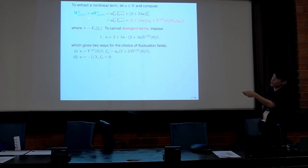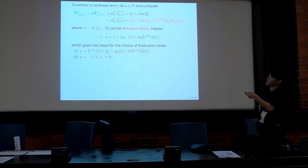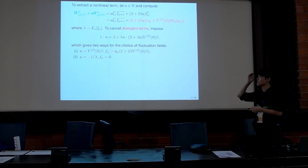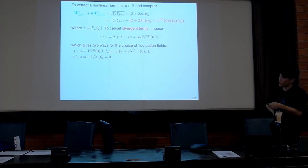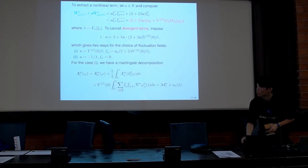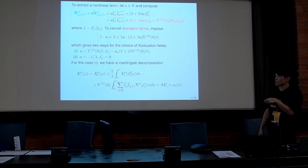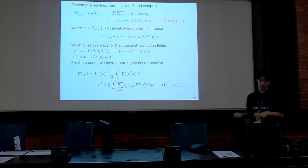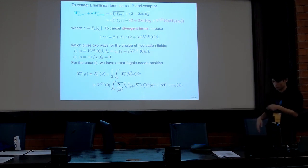If we consider a coupling of volume and energy with some constant u, we can choose u such that the linear part of the current becomes proportional to the original fluctuation field. There are two choices to realize this. From one choice, we obtain the fluctuation field from which the KPZ equation can be derived. The current decomposition for case one contains a quadratic term, so we can use previous results to derive the stochastic Burgers equation by a compactness argument.